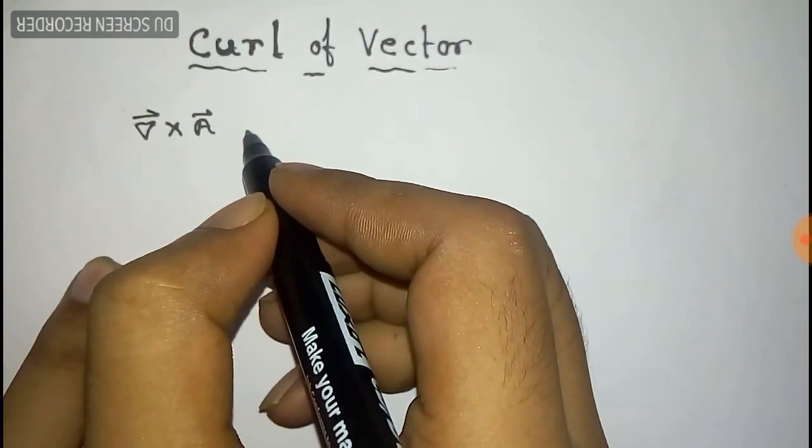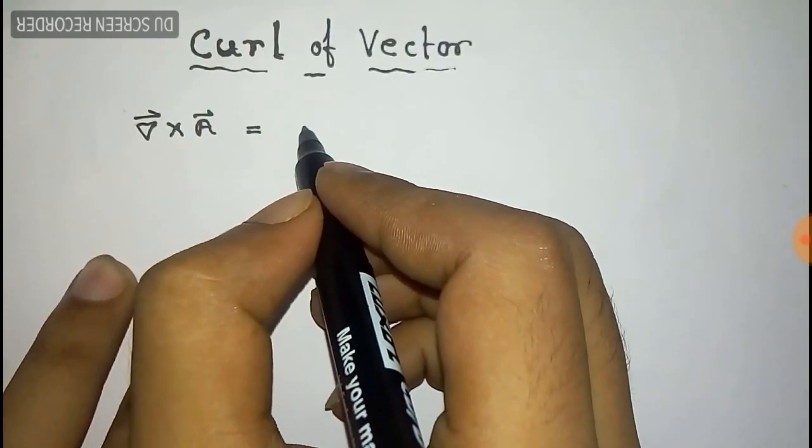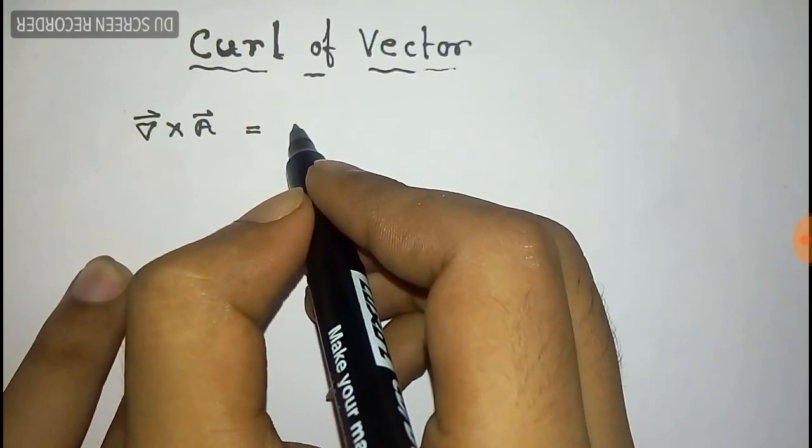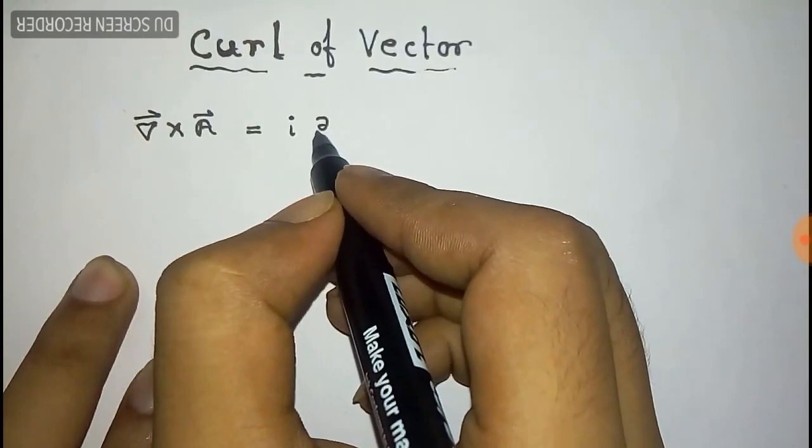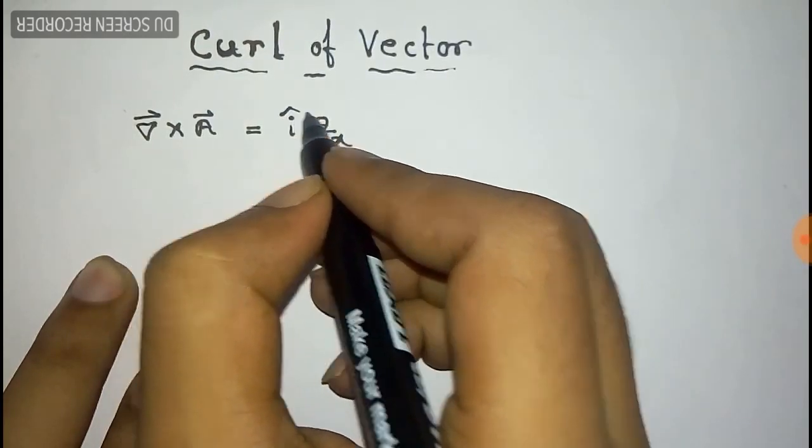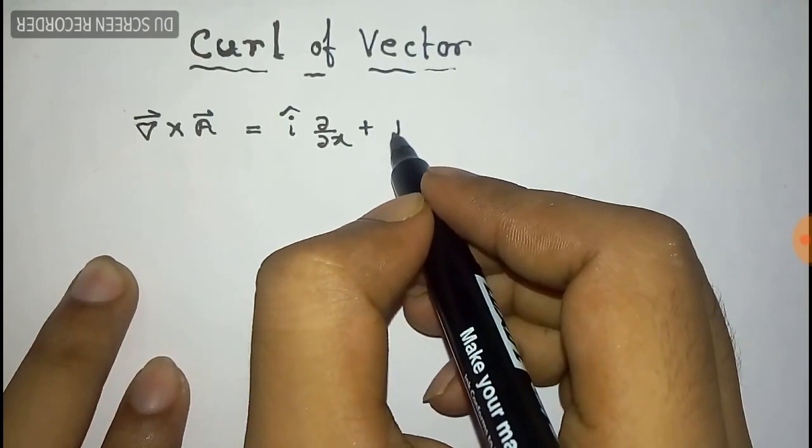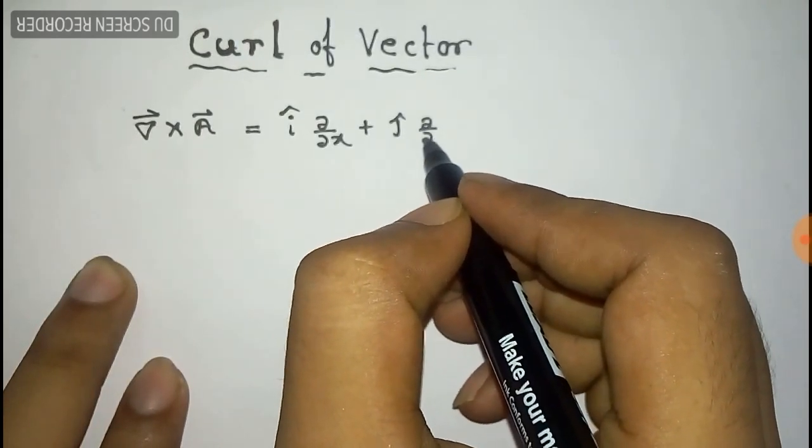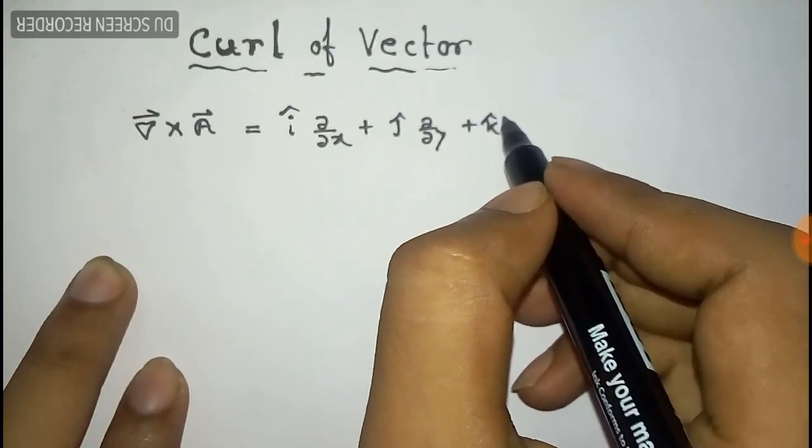Here, nabla is given by î ∂/∂x plus ĵ ∂/∂y plus k̂ ∂/∂z.